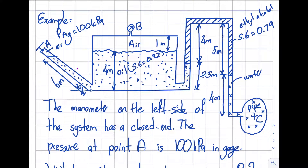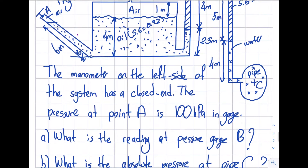Today I'm going to solve a very comprehensive question from the manometer concept. The manometer on the left side of the system has a closed end — it's sealed over there with air. The pressure at point A is 100 kilopascal gauge, so right at that point pA is given as 100 kPa gauge.